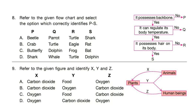Question 9: Refer to the given figure and identify X, Y and Z. Look at the figure and think about your answer. Correct answer is option B — carbon dioxide, oxygen, carbon dioxide. Y is oxygen, meaning plants release oxygen, and X and Z are carbon dioxide.